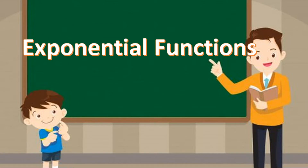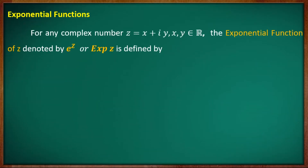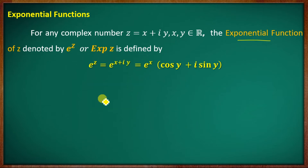In this discussion, we are going on the topic of exponential functions. For any complex number z equal to x plus iy, where x and y belong to ℝ, the exponential function of z, denoted by e raised to z or exp(z), is defined by e raised to z equal to e raised to (x+iy) equal to e raised to x into (cos y plus i sin y).